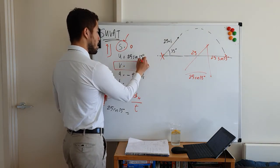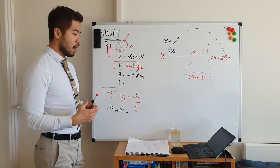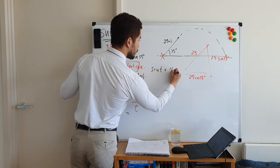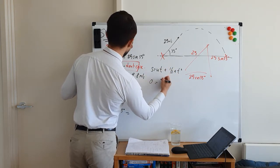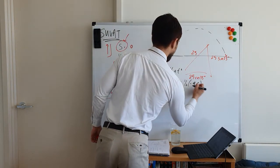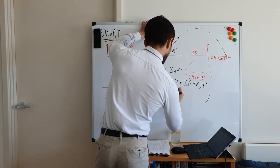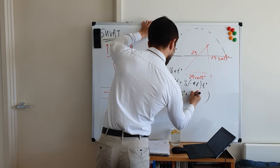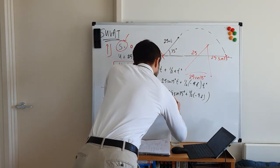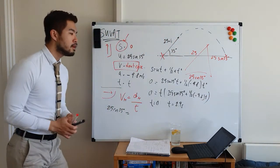We don't know v, but we don't need it. For SUVAT questions we only need four of the unknowns. T is what we're trying to find, so we use s equals ut plus half at squared. Substituting: s is zero, u is 25 sine 35 degrees, and a is minus 9.8. After substituting and simplifying, there will be two solutions: t equals zero and t equals 2.9 seconds.